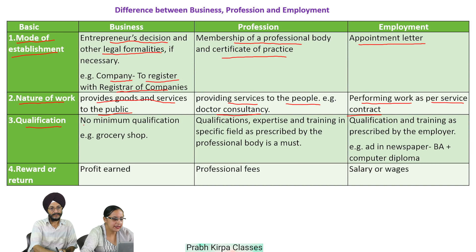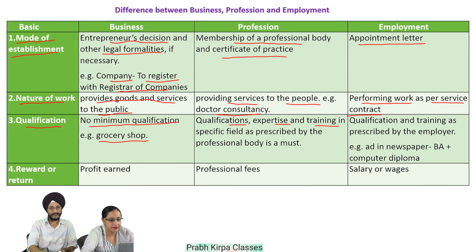Third: Qualification. To set up a business, no minimum qualification is required — for example, a grocery shop. In case of profession, qualifications, expertise and training in a specific field as prescribed by the professional body is a must. In case of employment, qualification and training are prescribed by the employer.